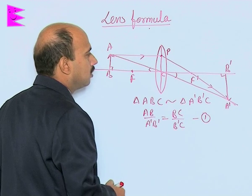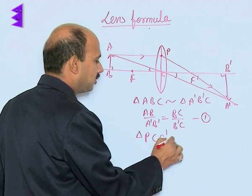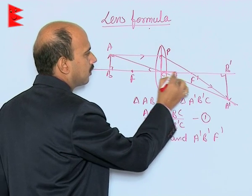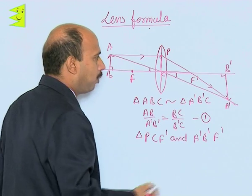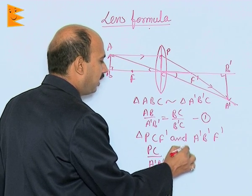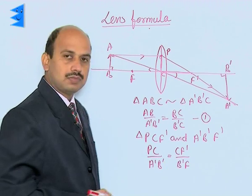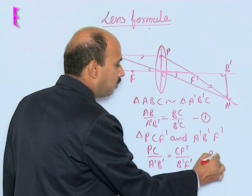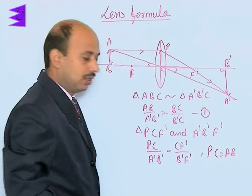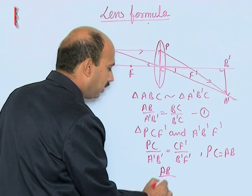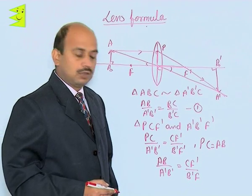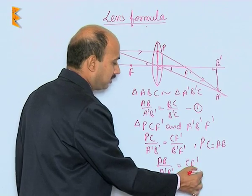Similarly, we can take triangle PCF' and triangle A'B'F'. These two triangles are again similar by the same property. So we can write: PC / A'B' = CF' / B'F'. Now, PC is equal to AB because the distance between two parallel lines are equal — so this and this line are parallel, so PC equals AB. So it can be written: AB / A'B' = CF' / B'F'.